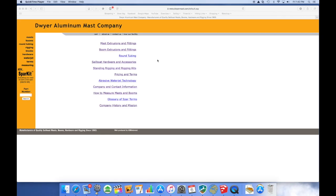This is the home page for the Dwyer Aluminum Mast Company. The URL is dwyermast.com. So here on the left hand side is the menu that will stay with you no matter where you go on the website, and it's what I focused on initially.